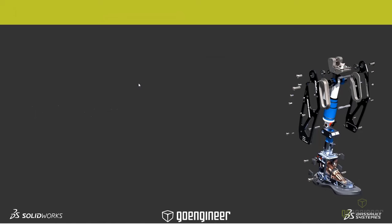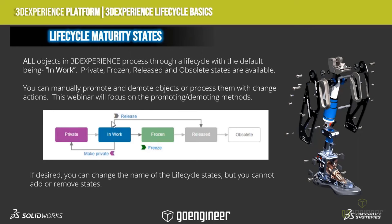Going beyond that, before I jump into showing you how the platform works inside of SOLIDWORKS — a little bit on maturity states. Everything that I save to the platform automatically ends up in a lifecycle — it ends up in the in-work lifecycle. These are the lifecycle maturity states that the platform comes with out of the box. In general, you can change the name of them, but you can't add or take away from them with our connector product, keeping it pretty simple.